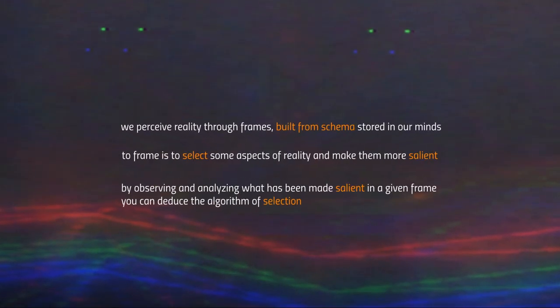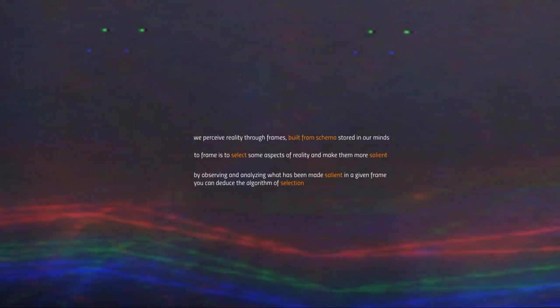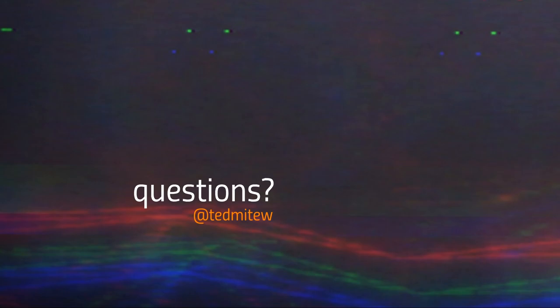To finish off: the active perception of reality happens through frames, and frames in turn are built from schema stored in our minds. Schema are patterns, relationships, and associative chains. We build frames by selecting some aspects of reality — selecting specific associative chains and making them more salient, making them stand out, weaving them into a specific pattern. And finally, by observing and analyzing what has been made salient for our consumption in a given frame, you can deduce the algorithm of selection — you can deduce the intentions of the frame maker. If you have any questions, please hit me up on Twitter at TedMetheu. Thank you all for listening and see you online.